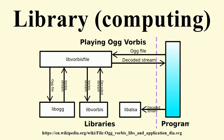In computer science, a library is a collection of non-volatile resources used by computer programs, often to develop software. These may include configuration data, documentation, help data, message templates, pre-written code and subroutines, classes, values or type specifications.